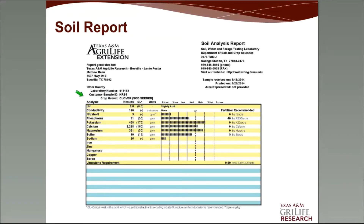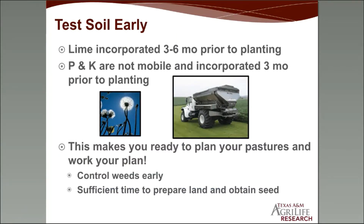Your soil test report will show pH, nitrate, phosphorus, and potassium, along with a fertilizer recommendation — follow that recommendation. Take this soil test very early in the process. If you have a low pH or acid soil, incorporate lime three to six months prior to planting, because it takes time for lime to activate and raise soil pH. Phosphorus and potassium are not mobile nutrients and need to be incorporated about three months prior to planting — if you apply phosphorus and plant a week later, that phosphorus is not yet plant available.